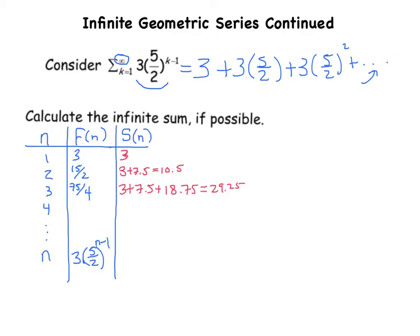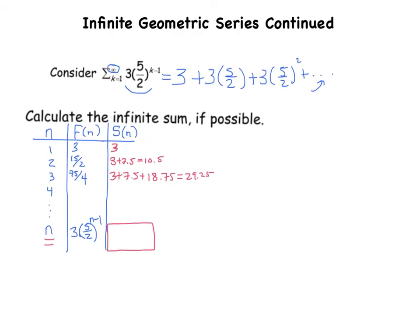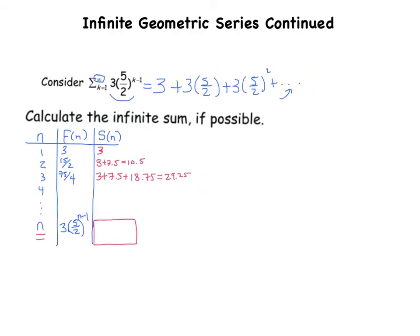We want an expression for the sum of the first n terms, and then we're going to examine what happens when n goes to infinity. Let's use Euclid's method. So we know that the sum of the first n terms would be 3 plus 3 times 5 halves to the 1 plus 3 times 5 halves squared.